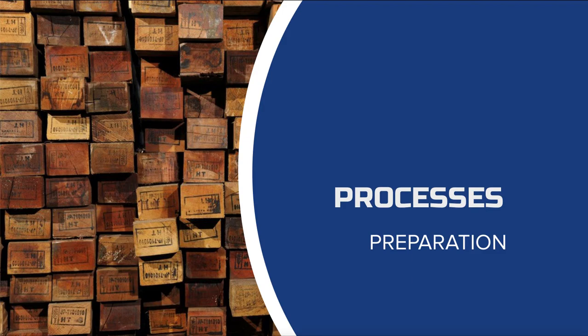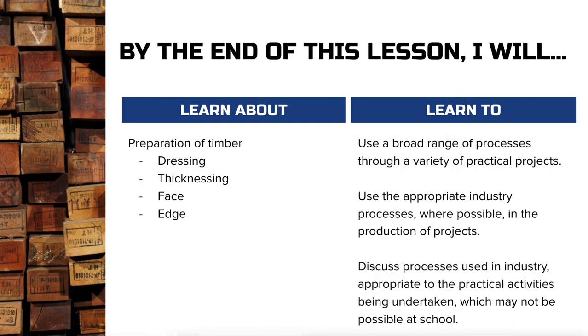We're moving on again in the Industrial Technology syllabus for Stage Six, looking at the preliminary course. Under industry-related manufacturing technologies, under the heading of processes, tools and machinery — specifically processes — we've gone through planning and we're now moving into preparation of timber. We're going to learn about dressing.